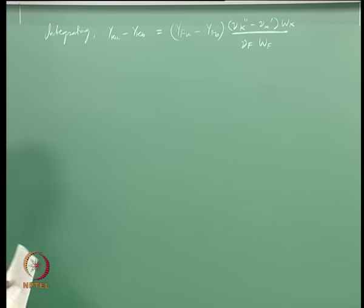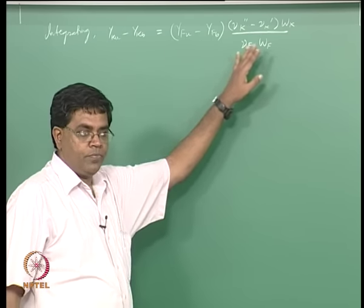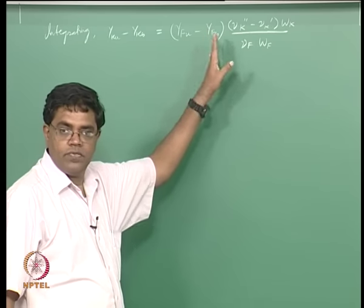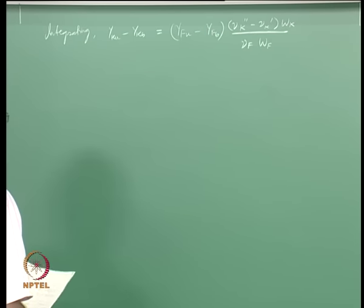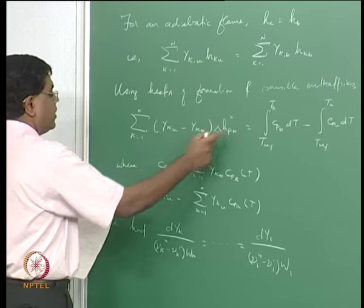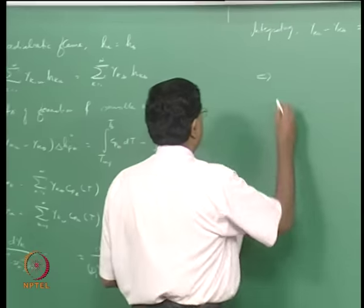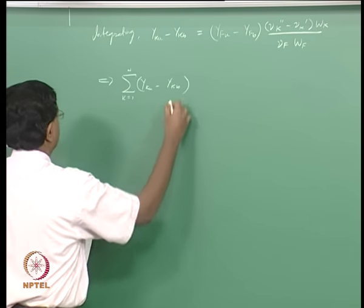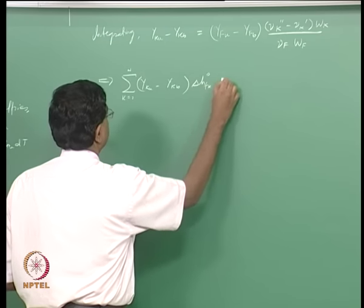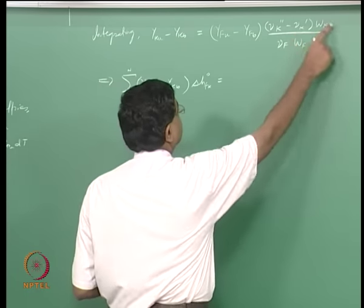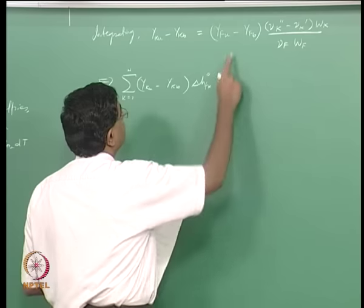Keep in mind nu_f here is the stoichiometric coefficient for the fuel. There is no fuel on the right-hand side, so (nu_k'' minus nu_k') for fuel is simply nu_f. From here, if you know the difference for the kth species, multiply by delta h_fk and sum over all k: sigma k equals 1 to n of (y_ku minus y_kb) times delta h_fk0.